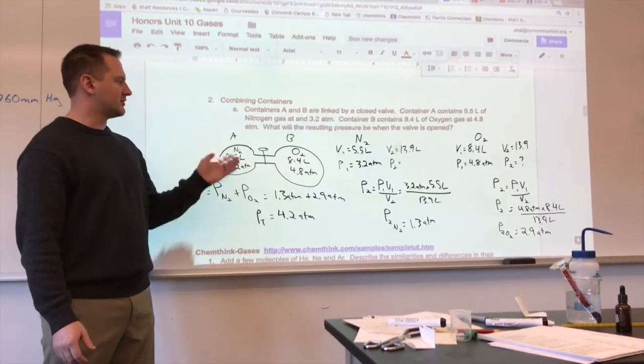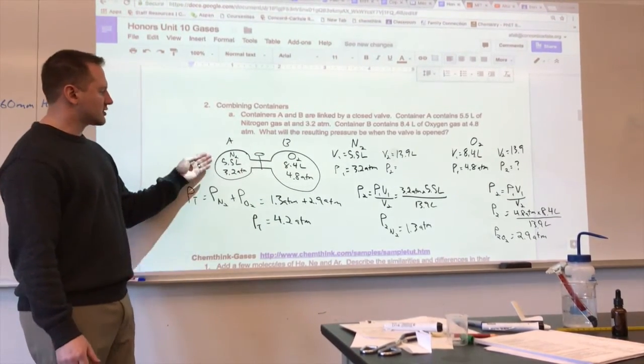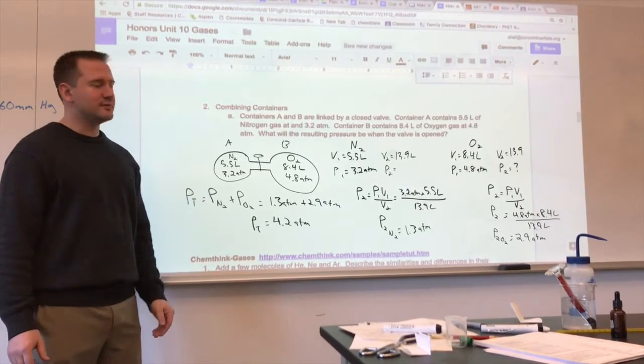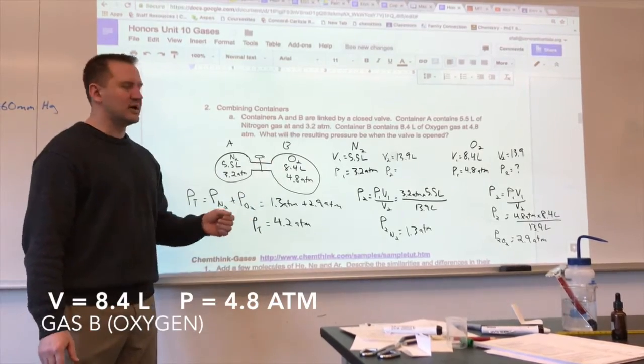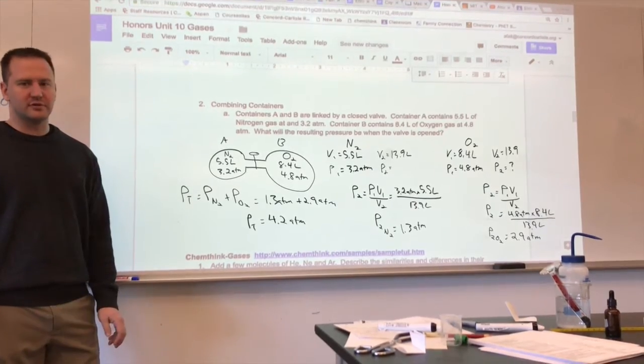In this case, you have gases in container A, which is nitrogen, and B, which is oxygen. Initially, we have a volume of 5.5 liters and 3.2 atmospheres for nitrogen, and for the oxygen gas container, we have 8.4 liters of space being occupied, and it has a pressure of 4.8 atmospheres.